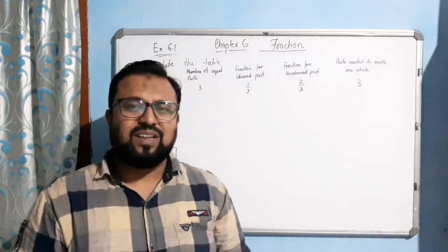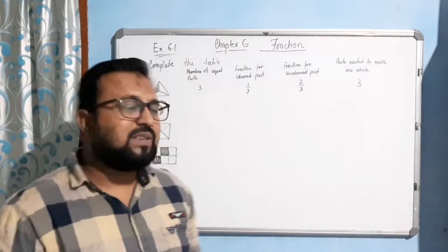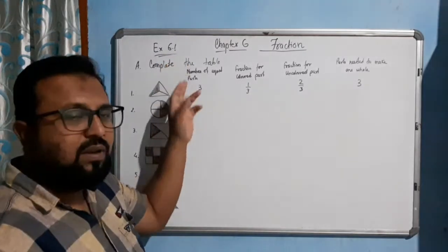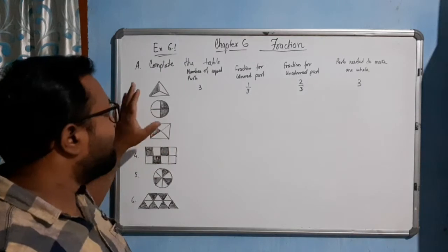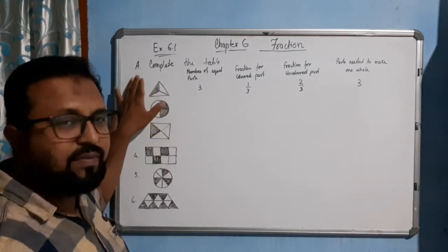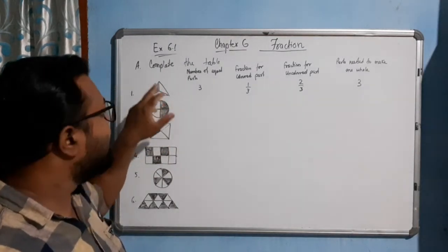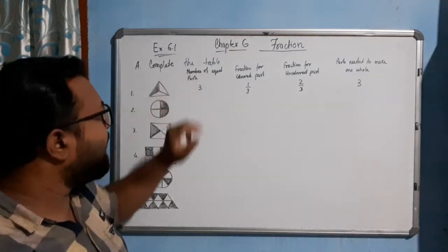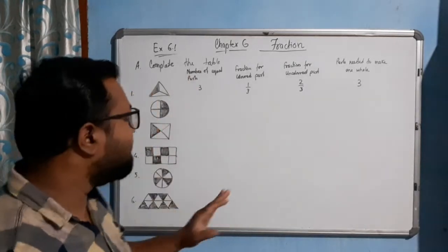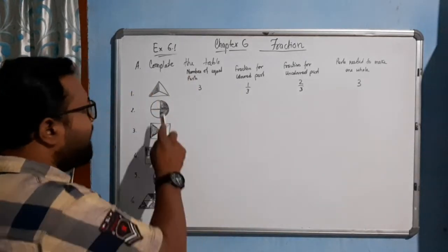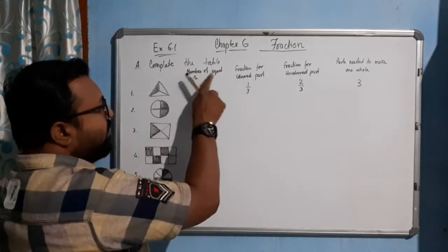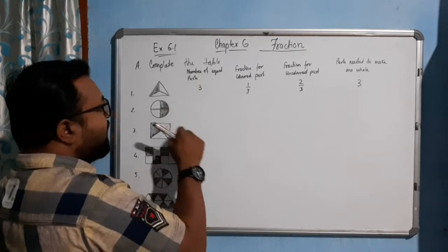Hello students, welcome to the first exercise 6.1 of this chapter. Question number (a): complete the table. I have not drawn the table here, but see here — this is a triangle. The columns are: number of equal parts, fraction of colored part, fraction of uncolored part, and parts needed to make one whole.